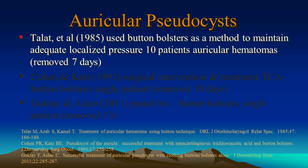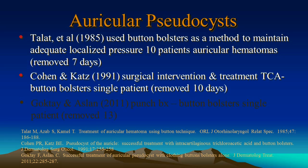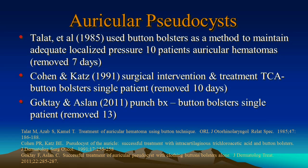The use of buttons was first reported by Tallet et al in 1985. The method was used to maintain adequate localized pressure in 10 patients with auricular hematomas. The buttons were removed after seven days. In 1991, Cohen and Katz used surgical intervention followed by treatment with trichloroacetic acid button bolsters in a single patient. In this particular case, the buttons were removed 10 days later. In 2011, Gokte and Aslan used a punch biopsy technique to remove the fluid and then a button bolster was sutured into place in a single patient. The buttons were kept in place for 13 days.